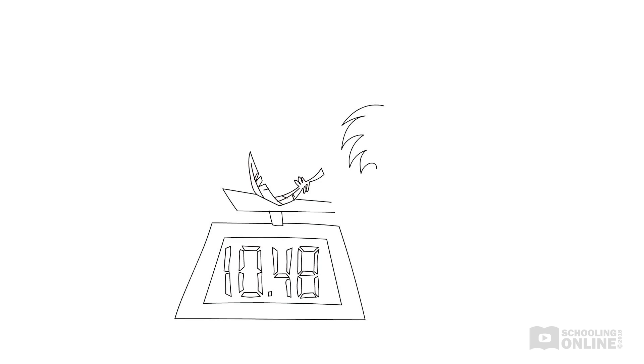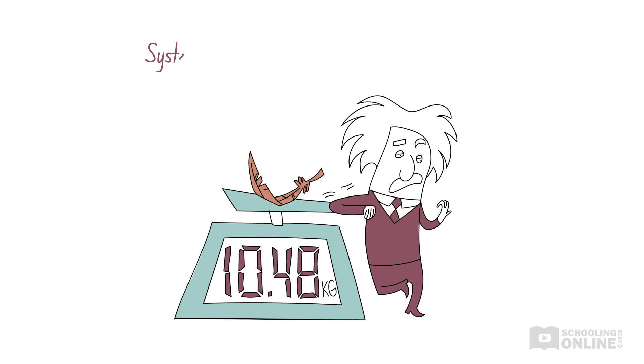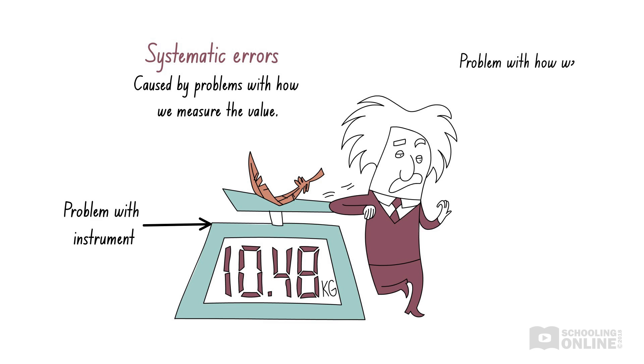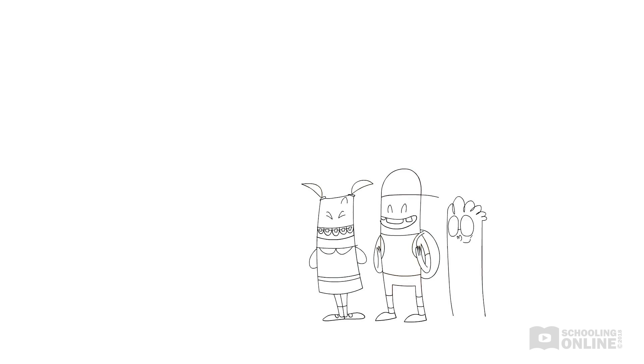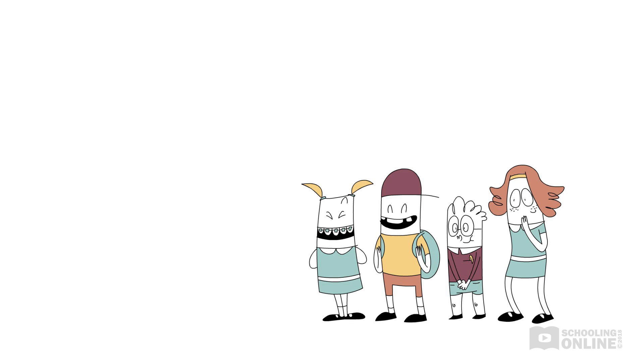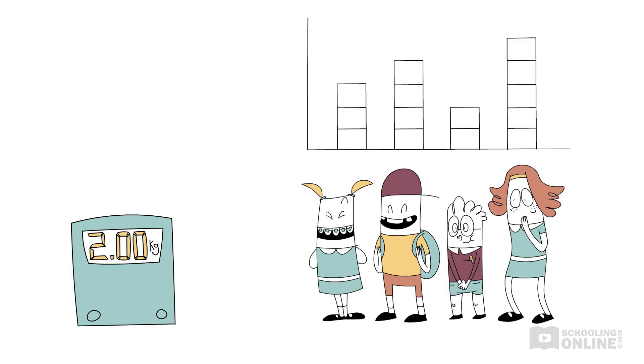But what gives us systematic errors in our experiments? Systematic errors are almost always a result of problems with how we have measured the value. That is, there is a problem with the instrument we are using to take the measurement, or there is a problem with the way in which we are using the instrument. For example, imagine you are weighing everyone in your class. However, when nothing is on the scale, it already has a reading of 2 kilograms. What will happen?